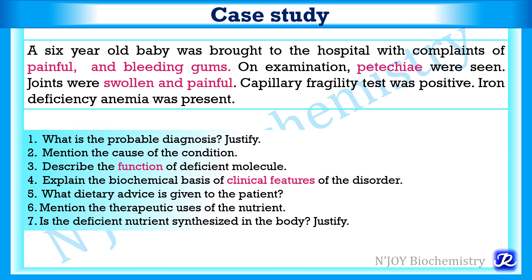Vitamin C cannot be synthesized in the body because in humans and higher primates, the enzyme gulonolactone oxidase of the uronic acid pathway is absent. Therefore, vitamin C is an essential vitamin that must be supplied in the diet. In today's video, we have covered dietary sources, RDA, biochemical functions, deficiency manifestations, assessment, and therapeutic uses of vitamin C.